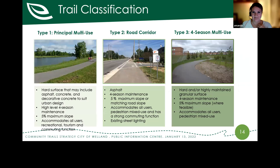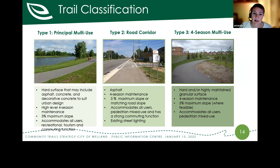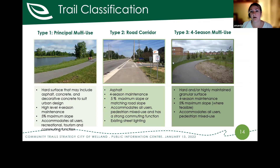Type one is a Principal Multi-Use Trail — your premier trail with tourism, commuter, and strong recreation functions. This is your Welland Canal Trail, your main spine, your community's gem. We're looking at fairly flat slopes of 5%, very accessible, paved surface treatments, four-season maintenance, accommodating all users. Type two is a Road Corridor Trail, which associates with on-road infrastructure but is an important part of the off-road trail system. Similarly, four-season maintenance, very flat at 5%, accommodating all users with more of a commuter function versus recreational premier focus.